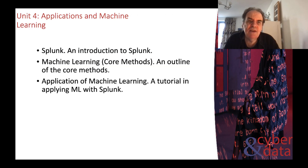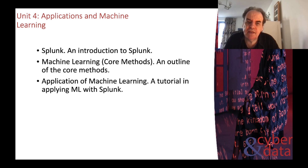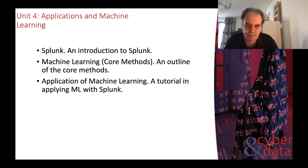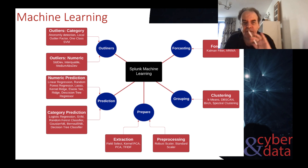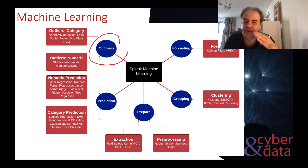Finally, we'll dive into Splunk — understanding how it operates and how we can use it to find things — then move on to applying machine learning within the Splunk infrastructure. We'll see that machine learning can be used in many ways: finding outliers in data, and identifying things at the extremes that might be called anomalies.